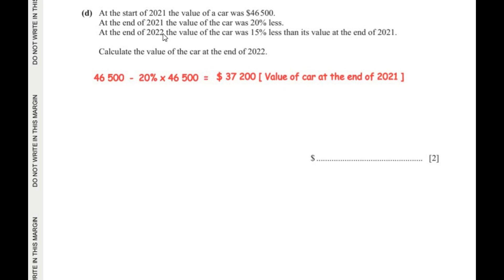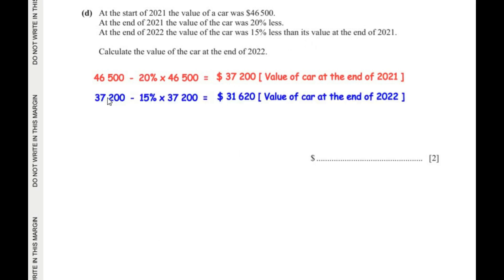At the end of 2022, the value of the car was 15% less than its value at the end of 2021. So starting from $37,200, we calculate: $37,200 − 15% of $37,200, which gives us $31,620. That is the value of the car at the end of 2022.